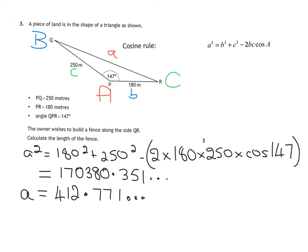So taking the square root, you get 412.771. So answer your question. We've been asked the length of QR. So we are going to give the length of QR to two decimal places. So QR is equal to 412.77 metres. Done.